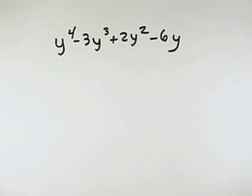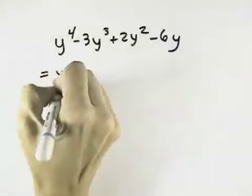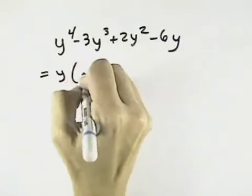We want to factor this polynomial completely, so we first look for the greatest common factor, which is y, and only y to the first power.